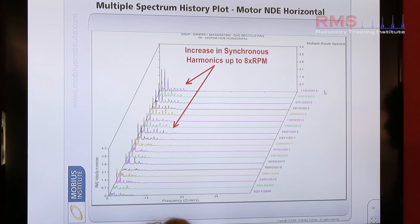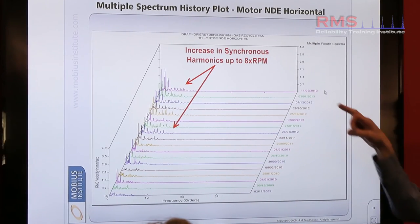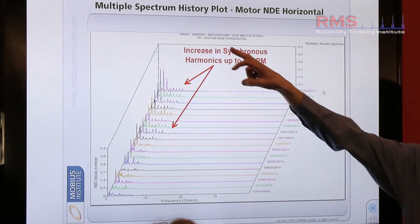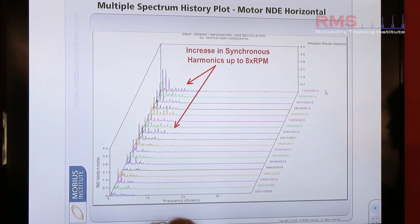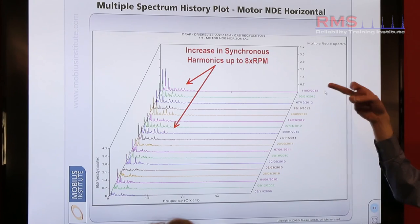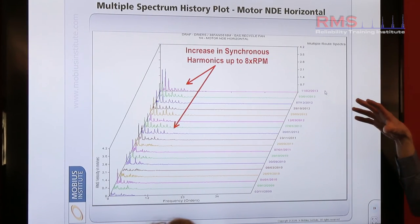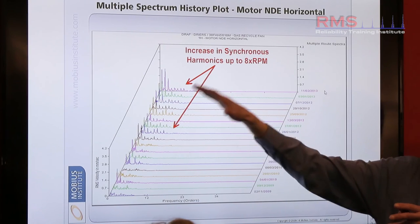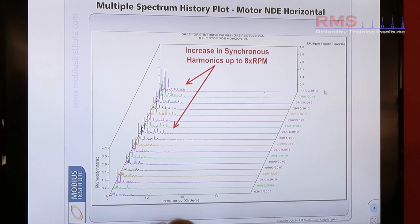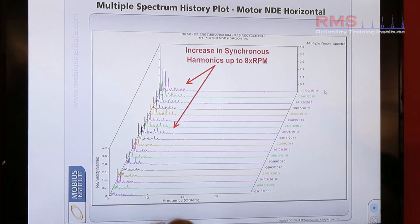Drilling down slightly deeper into the data, you can see the degradation. This is one particular point on the motor non-drive end. The most recent reading taken at the time when this was a problem is at the back. And you can see the visual picture there has changed, where you see obviously more activity at the back. Harmonics.